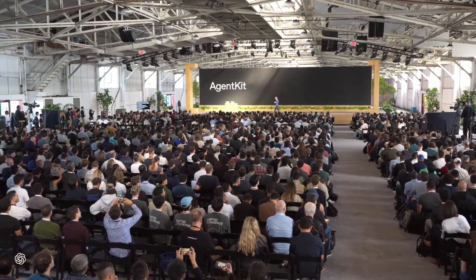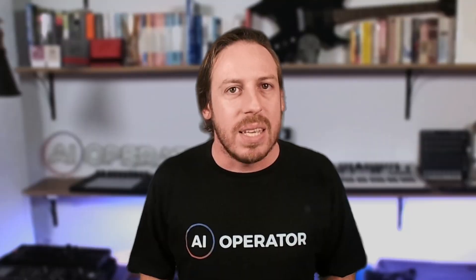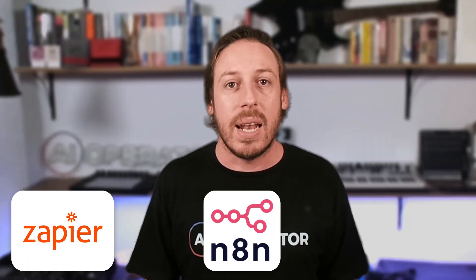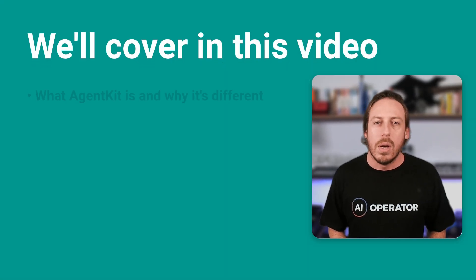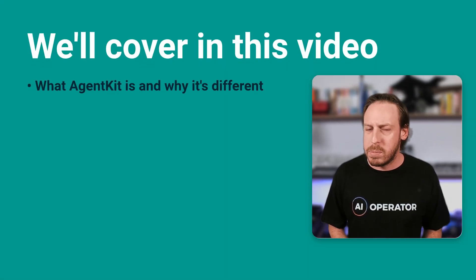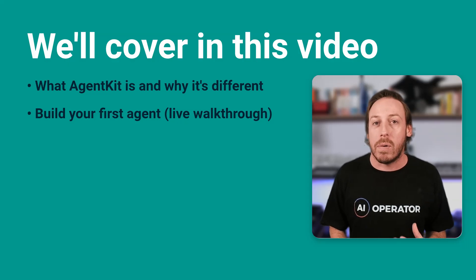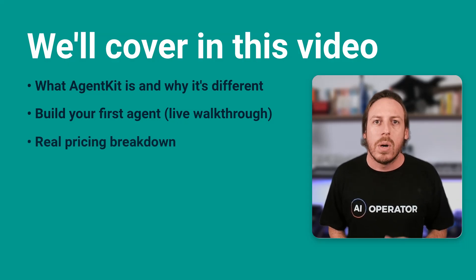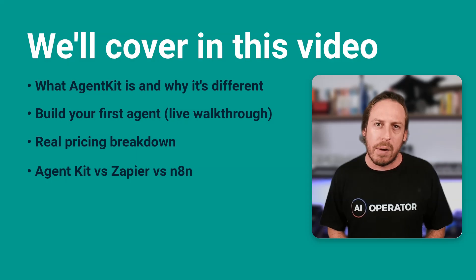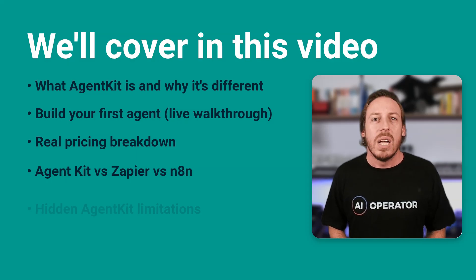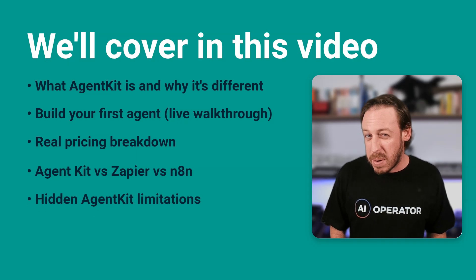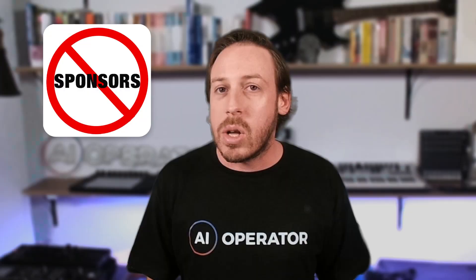On October 6th, 2025, OpenAI launched Agent Kit at Dev Day. This isn't just another API update. This is OpenAI going head to head with Zapier, N8N, and Make, and companies like Ramp are already cutting their development time from months to hours. Here's what we're covering today: what Agent Kit actually is, why it's different from ChatGPT, a live walkthrough, real pricing breakdown, head-to-head comparison, the brutal limitations, and who should use this and who shouldn't. This is not sponsored — I'm showing you the good, the bad, and the ugly.